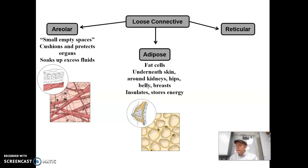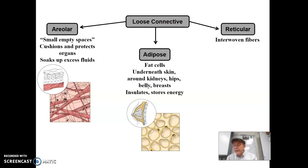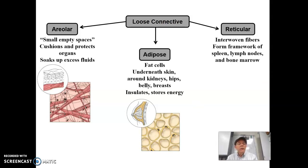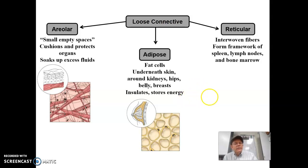Now, reticular loose connective tissue consists of interwoven fibers that form a framework of organs such as the spleen, lymph nodes, and bone marrow. Reticular has more fibers but also a lot of cells, and it just makes a framework to build organs out of. Your spleen, which is over below your stomach on the left-hand side, is made out of this — a semi-hard, semi-squishy organ because of it. It has fibers with cells all on it.